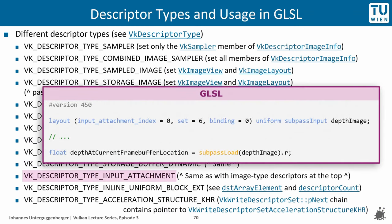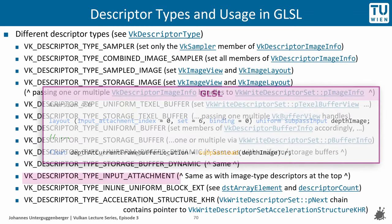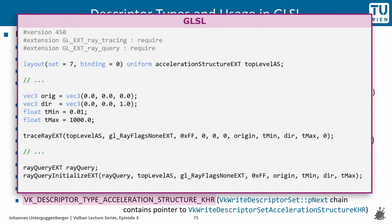Input attachments can be accessed as shown here. The last example shows how to access acceleration structures — once with a ray tracing pipeline using the traceRayEXT function, and a second time through a ray query, which can be used from within any shader type.